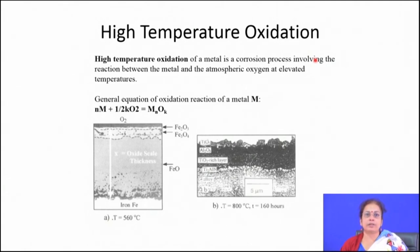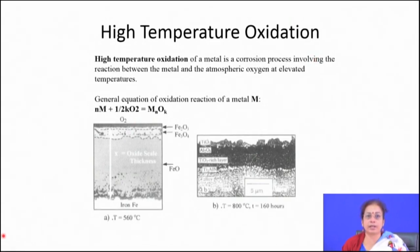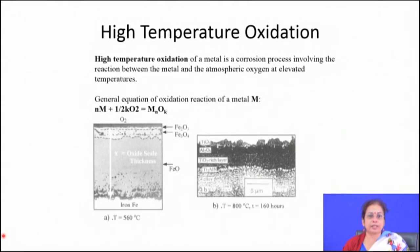It is a corrosion which involves the reaction between the metal and atmospheric oxygen or any other species at elevated temperature. If you go through the microstructure of the oxidized surface, you will find that there is formation of oxide scale on the surface, and that oxidation is basically a diffusion-controlled process.